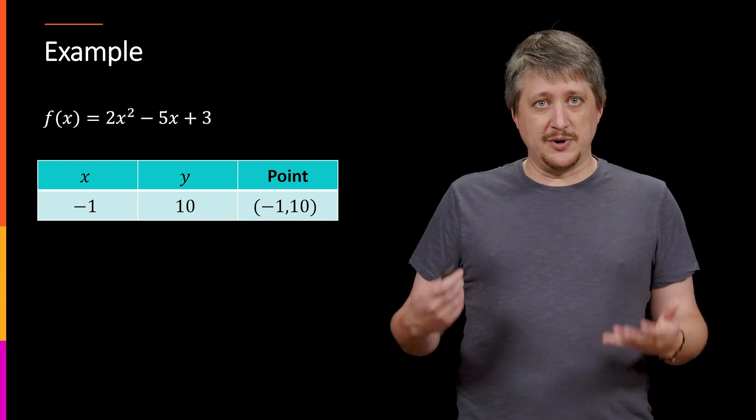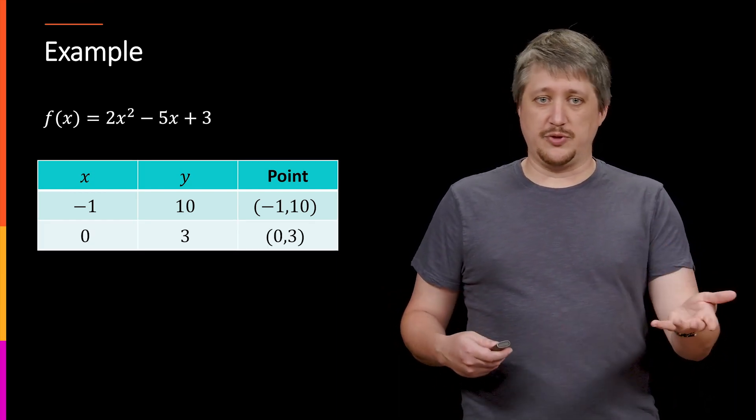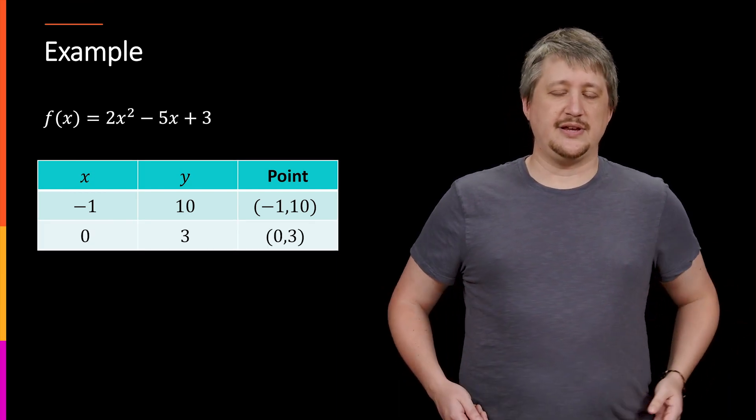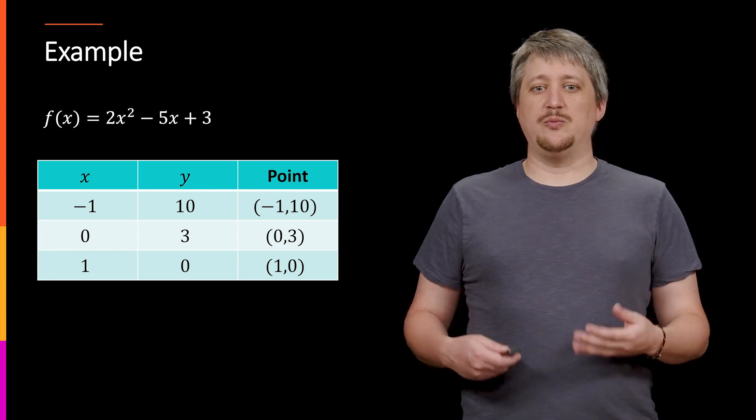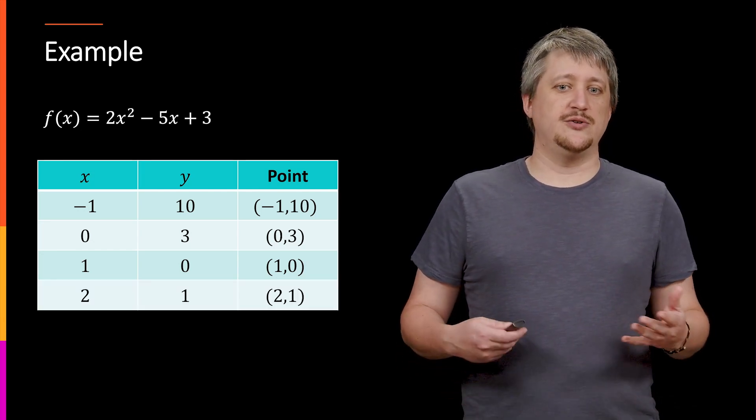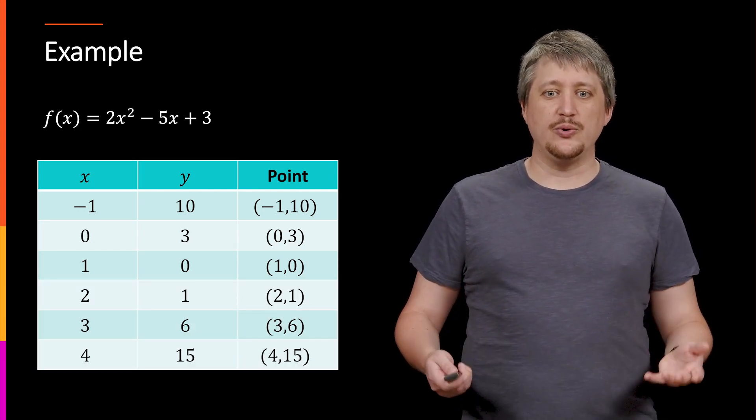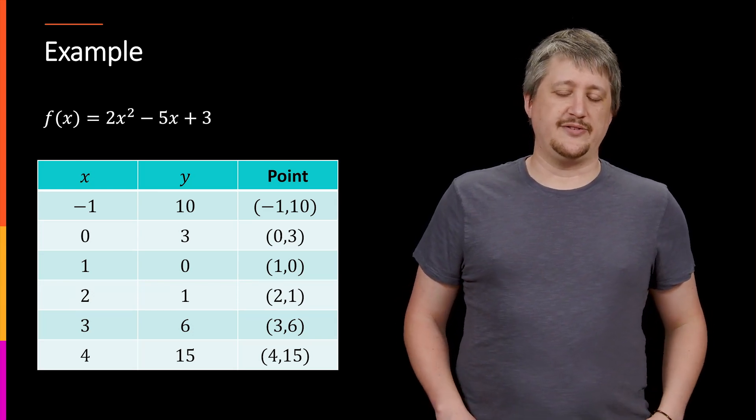And we do this with a bunch more X values. So you plug in 0, turns out we get 3. Get the point 0, 3. Plug in 1, we get 0, 1 comma 0. 2, 1. We just go through and make all these different points.